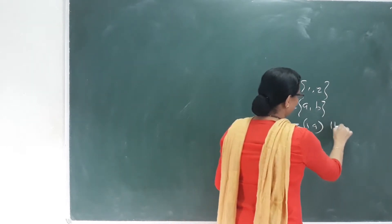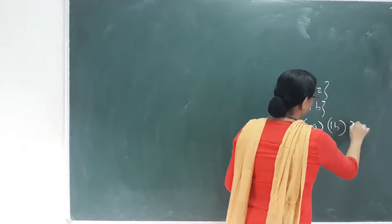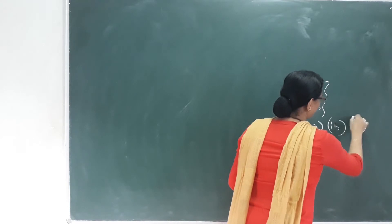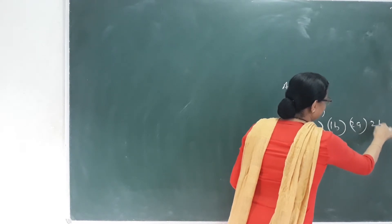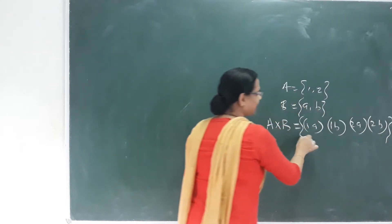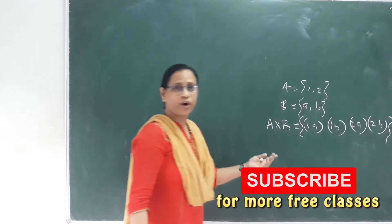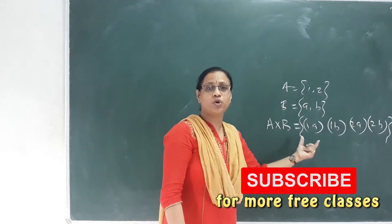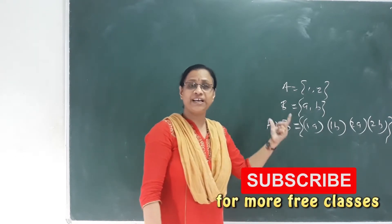So A cross B gives us: (1,a), (1,b), (2,a), (2,b). This is called the Cartesian product, also called the cross product.